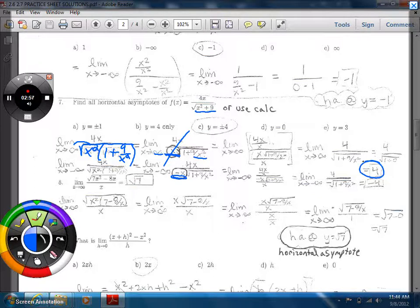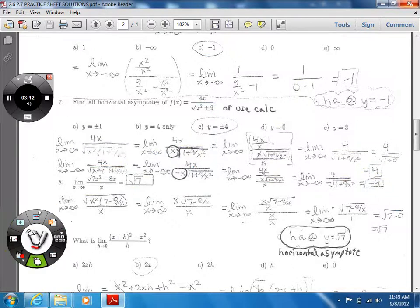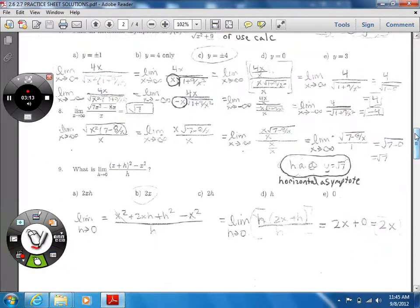And then the other case is when this is negative x, then the x's will cancel out. So you'll have four over a negative radical, and that radical turns out to be one if you let x go to negative infinity. And so then you end up with negative four. Okay, and we saw the same thing from the graph.